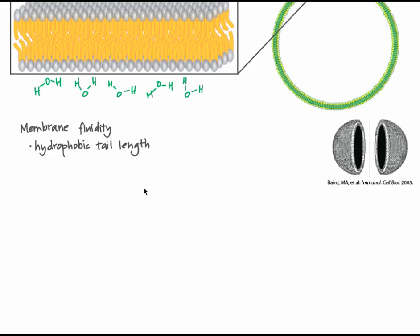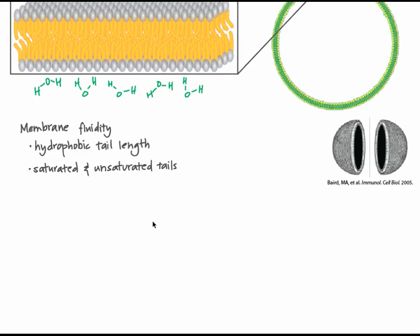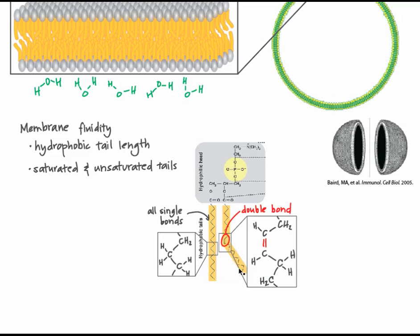Shorter hydrophobic tails, maybe 14 to 18 carbons, have less hydrophobic surface area, and thus less of a tendency to clump together. Shorter hydrophobic regions increase the fluidity of the bilayer. Additionally, the shape of the hydrophobic regions affects the fluidity of the membrane. Most phospholipids have two hydrophobic tails, one that has only single covalent bonds, and one that has at least one double covalent bond, with the rest single covalent.